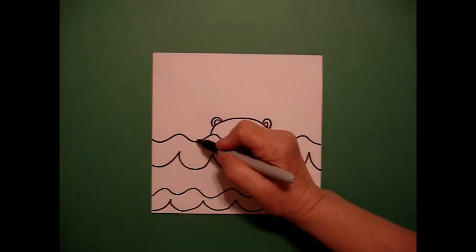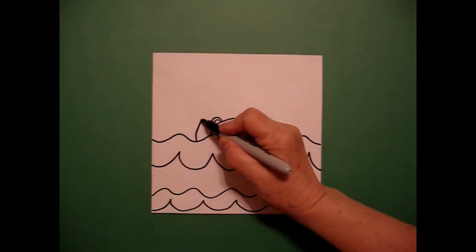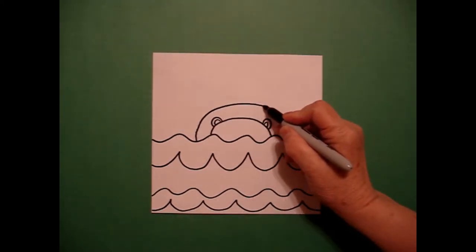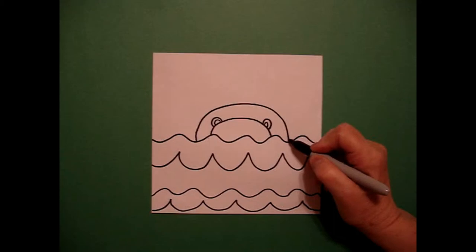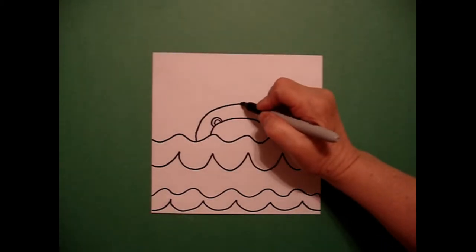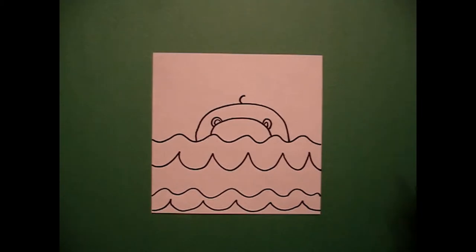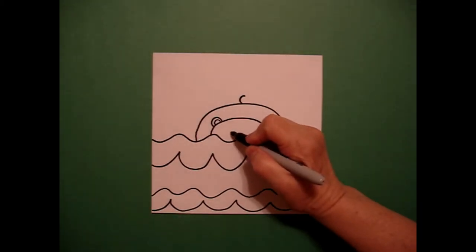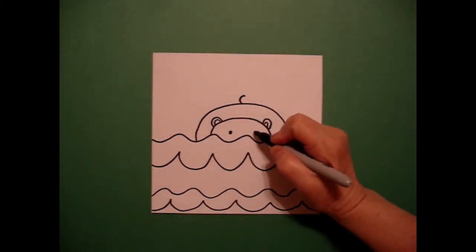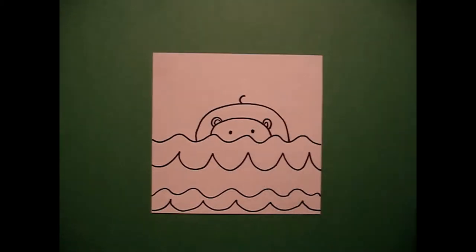I come back to the left and I draw a big curved line all the way across, connect. And right in the center, I'm going to just draw a little curved line. I come down and I draw one dot, two dots, and now I'm ready to color.